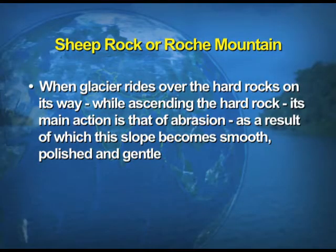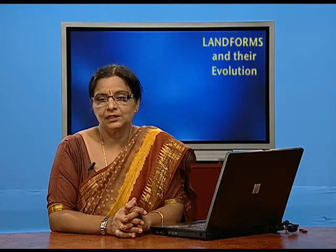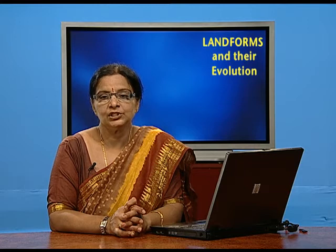The next erosional feature is the sheep rock, or Rocher Moutonnée. It is named so because it resembles a sheep from the top with wool on its back. When the glacier rides over hard rocks while ascending, the main action is abrasion, making the slope smooth, polished, and gentle. On the descending side, plucking is the main activity, giving it a rough and steep shape — this combined feature is known as a sheep rock.